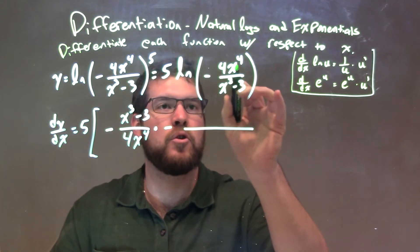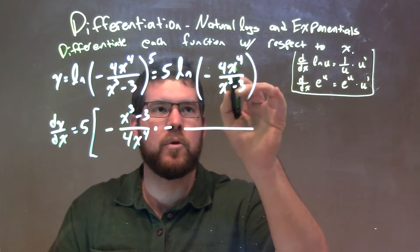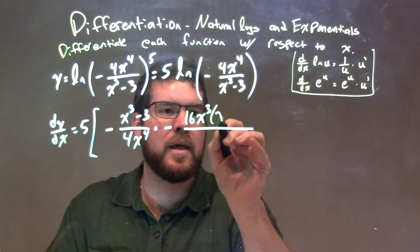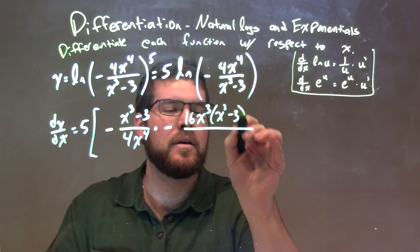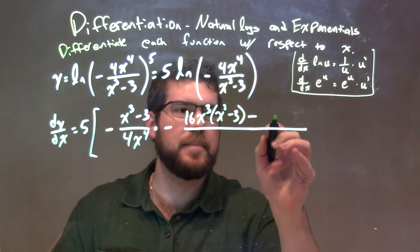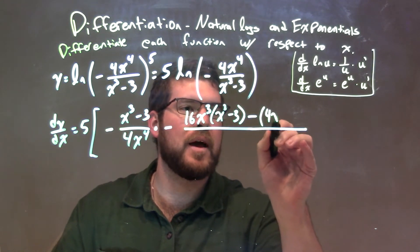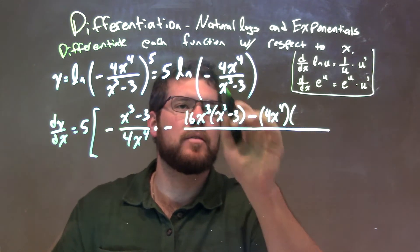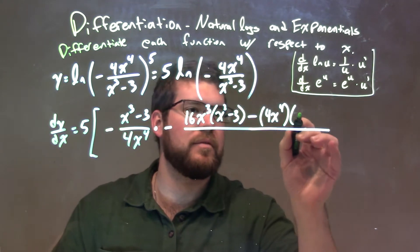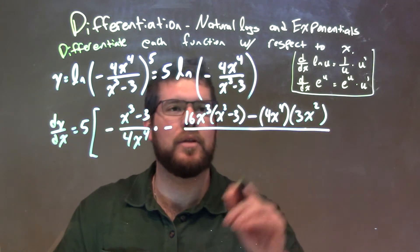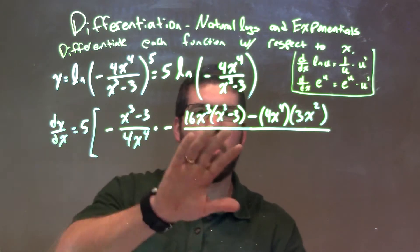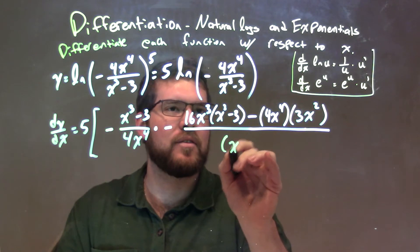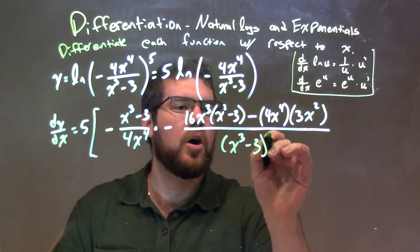The derivative of the inside is a fraction, so we need to use the quotient rule. The quotient rule has: derivative of the numerator — the derivative of 4x to the fourth is 16x to the third — times the denominator, x to the third minus 3, minus the numerator 4x to the fourth times the derivative of the denominator. The derivative of x to the third is 3x squared, and we don't need the minus 3. All of that is over the denominator squared, which is x to the third minus 3, all squared.